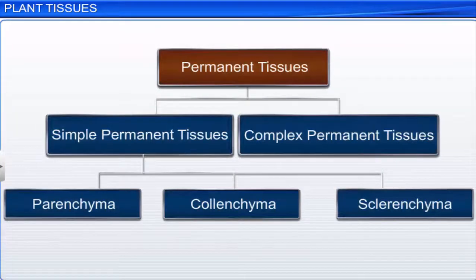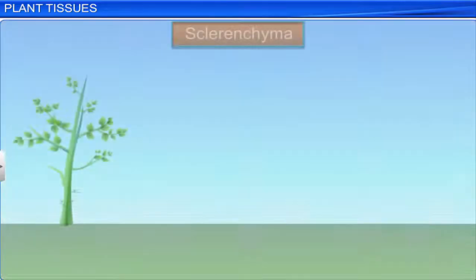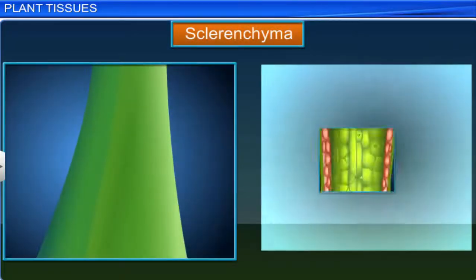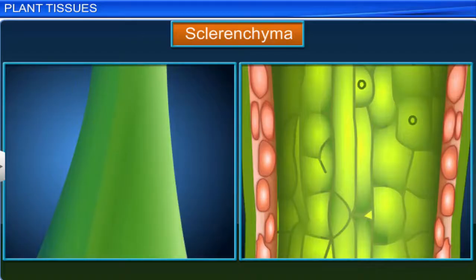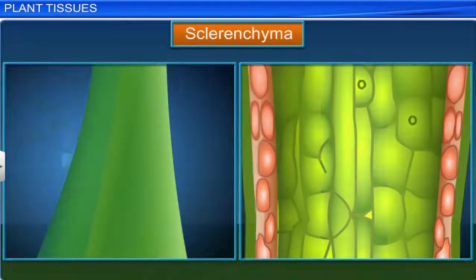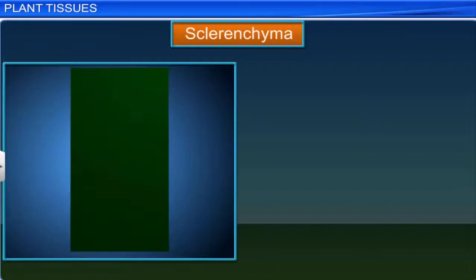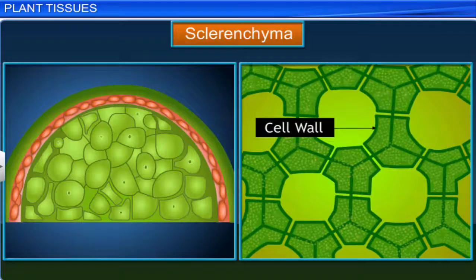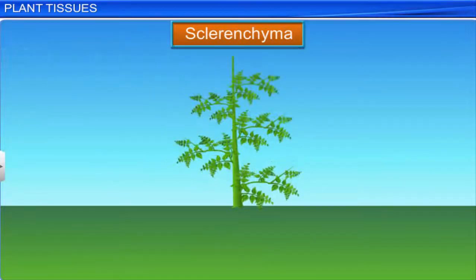Another type of simple permanent tissue is sclerenchyma. These are long, narrow cells with no intercellular spaces. Sclerenchyma consists of dead cells with lignin deposited in their cell wall. They occur in the vascular tissues of stems, veins of leaves, and in the covering of seeds and nuts. These tissues provide strength to the plant.